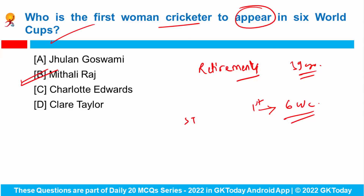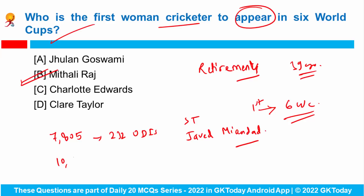She joins Sachin Tendulkar and Javed Miandad of Pakistan in this feat. She has scored 7,805 runs from 232 ODIs, which is the highest for any women's ODI player. She is also a long-serving Indian captain with a total of 10,868 runs across formats, which is the most in women's cricket records.